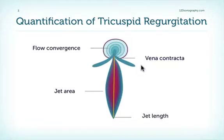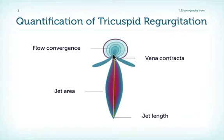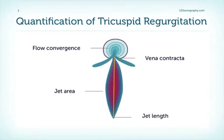The TR jet looks just like the MR jet. For review purposes, which components do we have? We have the flow convergence zone. We have the vena contracta, which is the area where the jet goes right through the orifice — the regurgitant orifice. Then we have the jet body, which you can describe via its length and via its area. Similar to the way we quantify MR, we also look at the proximal portions of the jet for the quantification of TR.